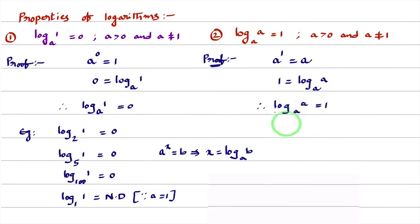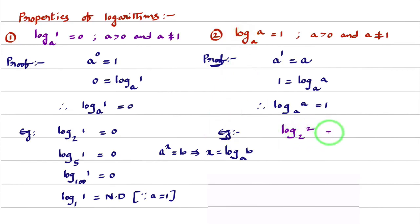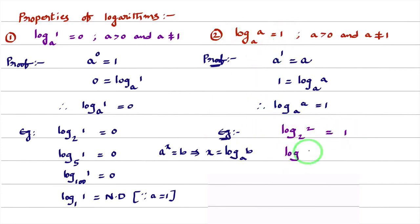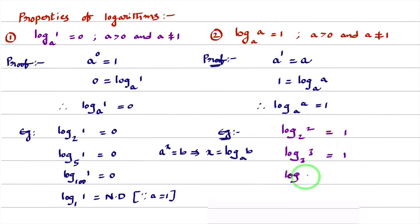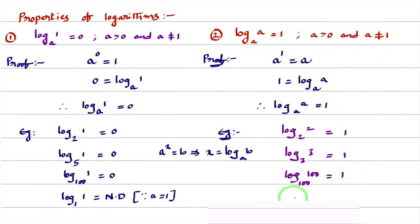From now onwards, we use this property as a formula. For example, log 2 base 2 equals 1. Log 3 base 3 equals 1. Log 100 base 100 equals 1 — because log A base A equals 1. Remember that A must be a positive real number and A must not equal 1.